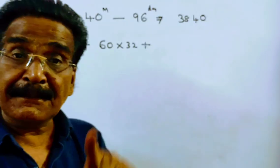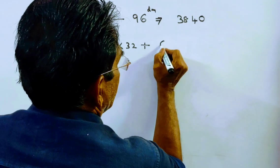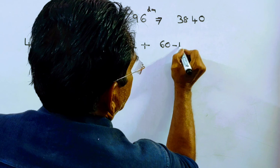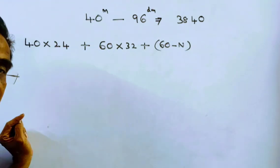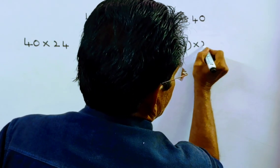After that, n men left, so 60 minus n persons will be there. This 60 minus n persons worked for 20 days.